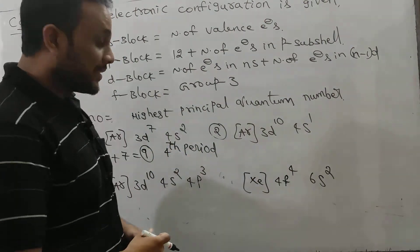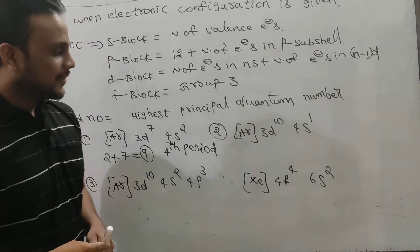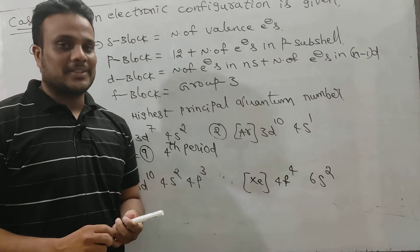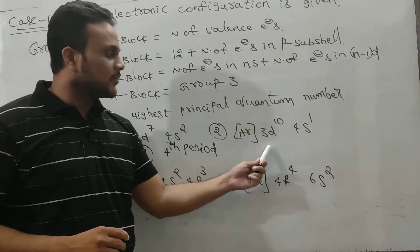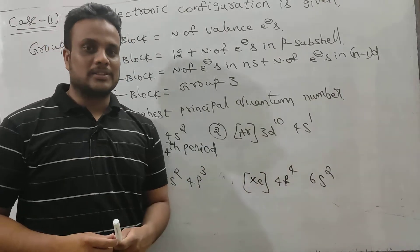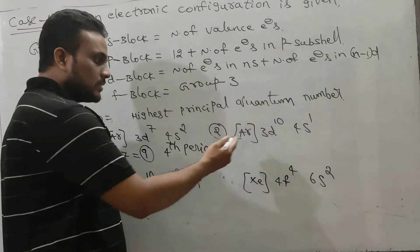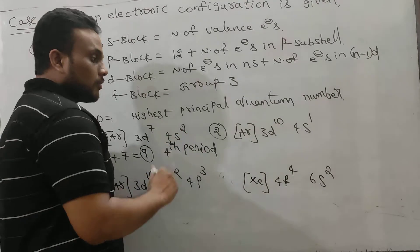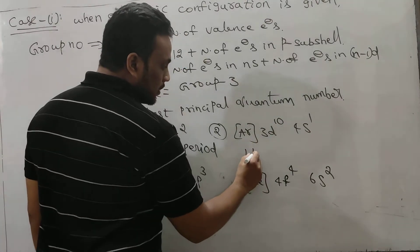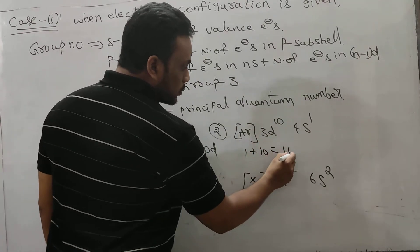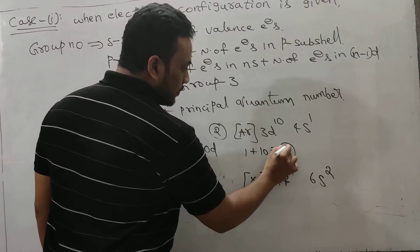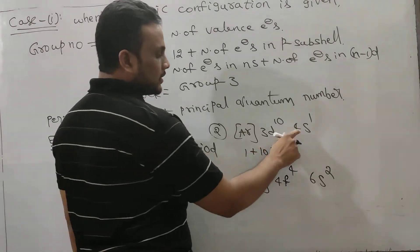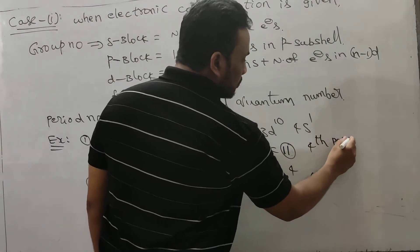Let's talk about this exceptional configuration. We all know about copper — atomic number 29 — where electron migration takes place from the 4S subshell to the 3D subshell for getting a completely filled stable configuration. So it is also a D-block element. In S, one electron; in D, ten electrons. So 1 plus 10 equals 11 — group number is 11. And what is the period number? It is 3 and 4; 4 is the highest number, so it belongs to the fourth period.